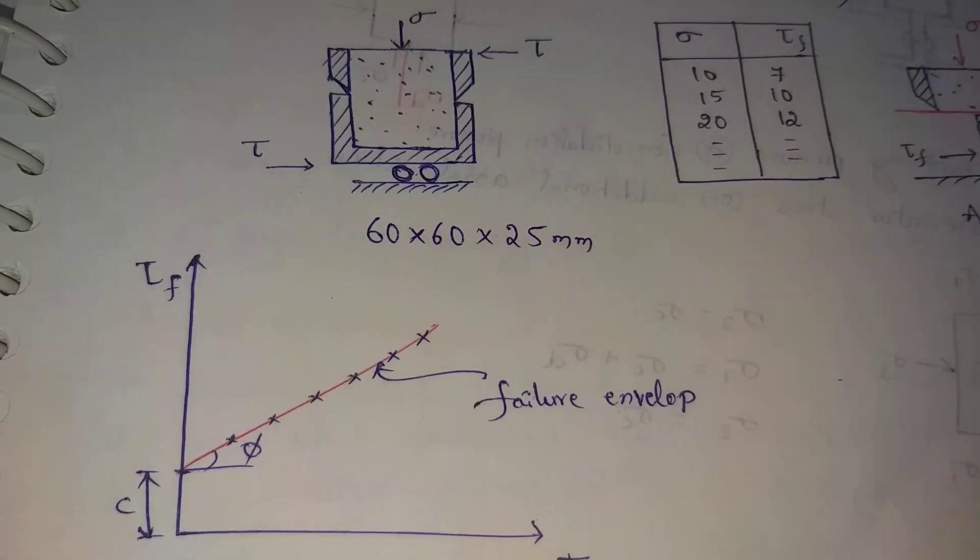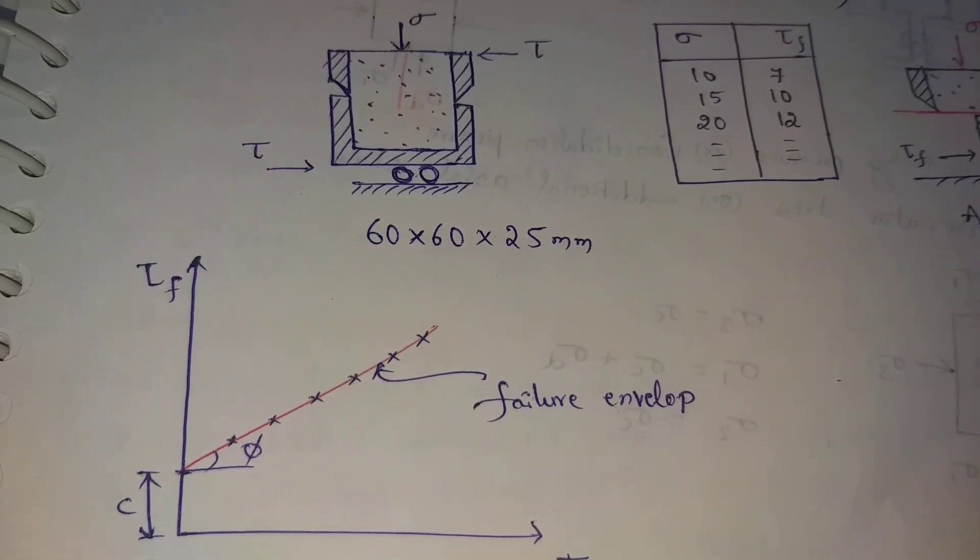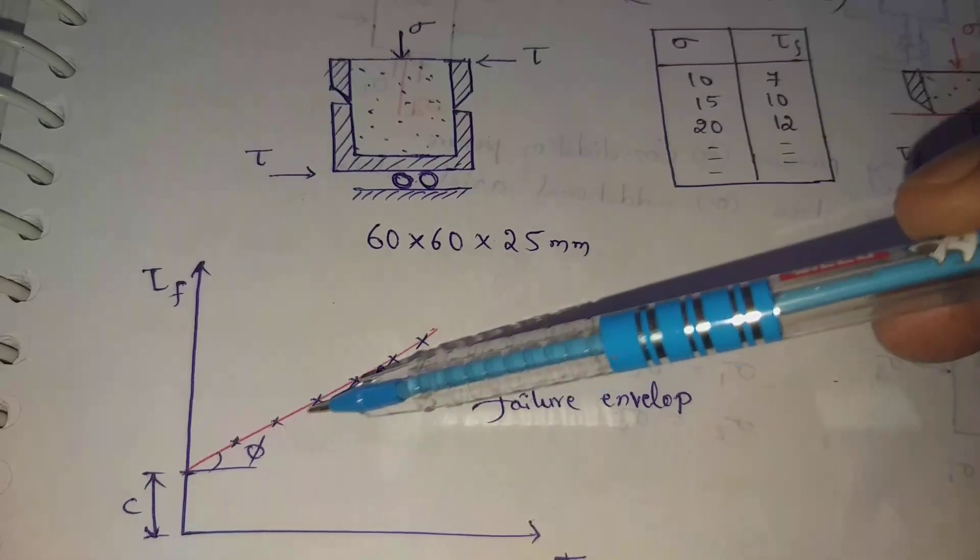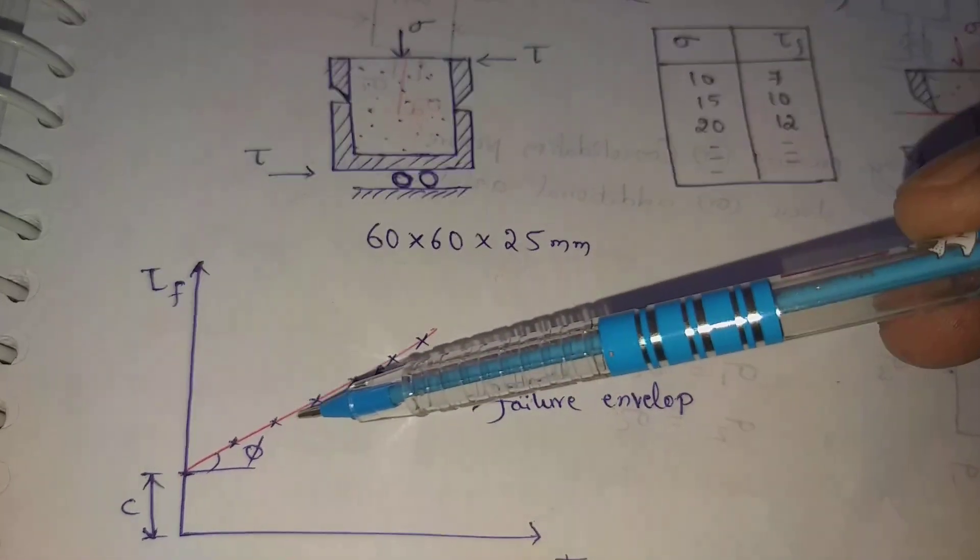We will do this box shear test. If the failure is formed, it will be formed. The red line will be formed.